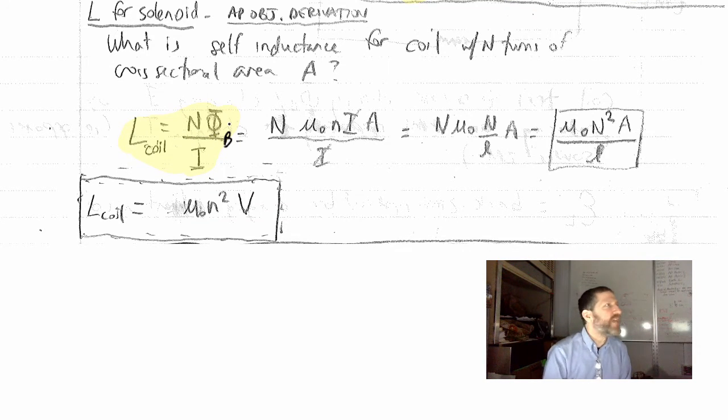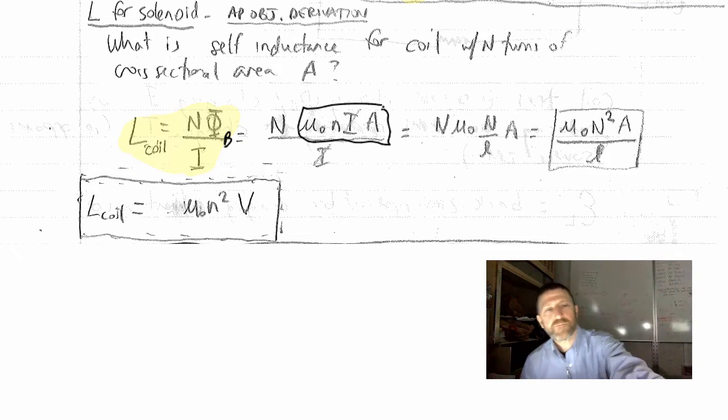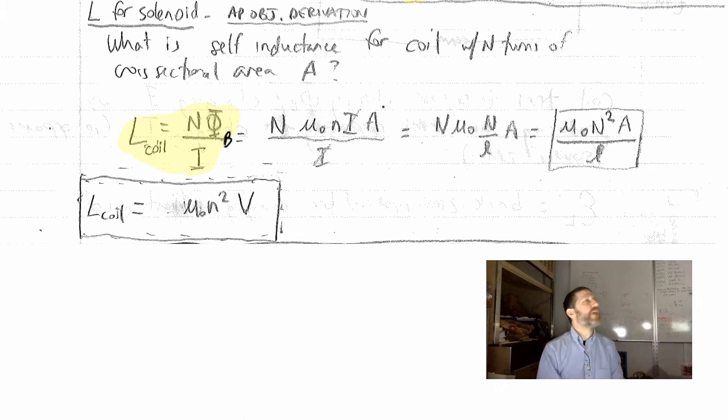so to derive the inductance of a coil, you simply got to figure out that n, that's the number of turns. What's that right there? What is μ₀nIA?